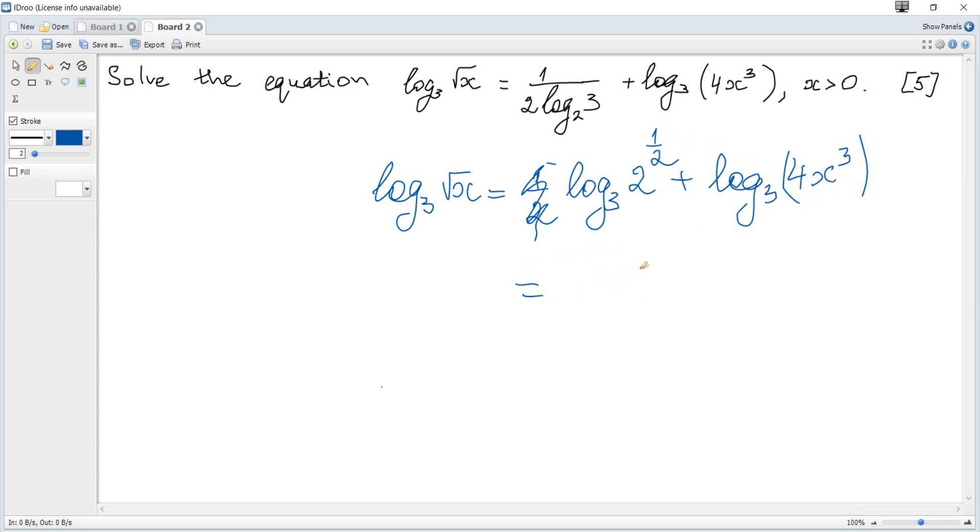Hence the right hand side becomes log of a product, because the sum of 2 logs to the same base is equal to a single log to the same base of the product. So it becomes log to the base 3 of 2^(1/2) times 4 times x³.